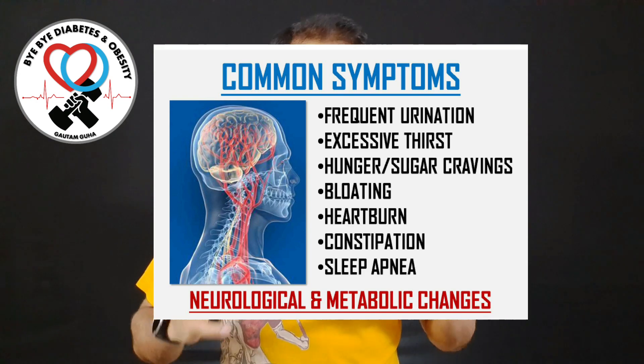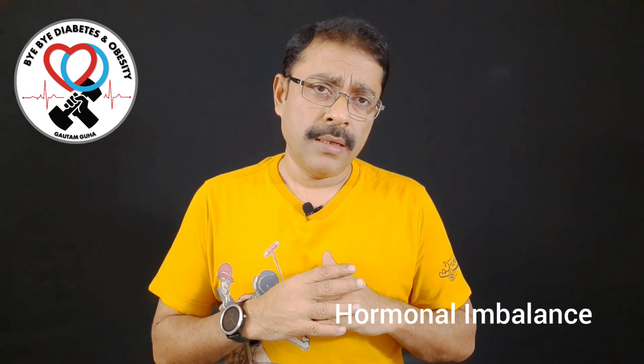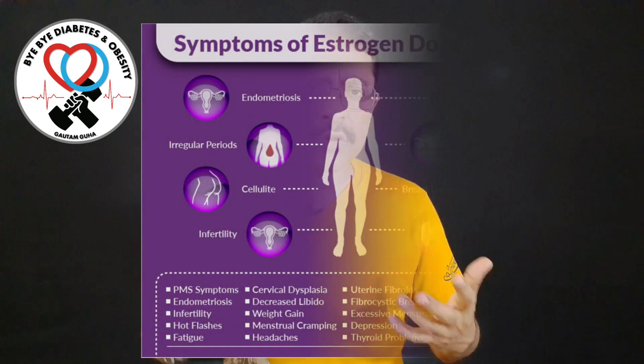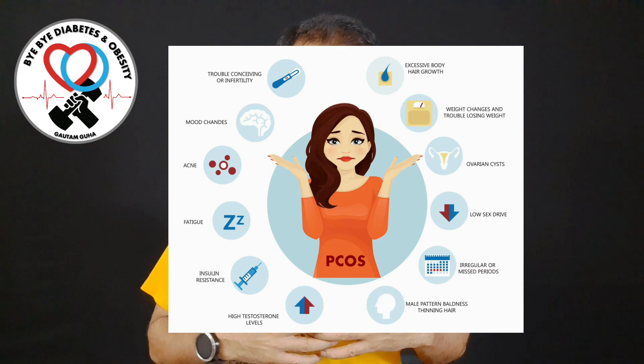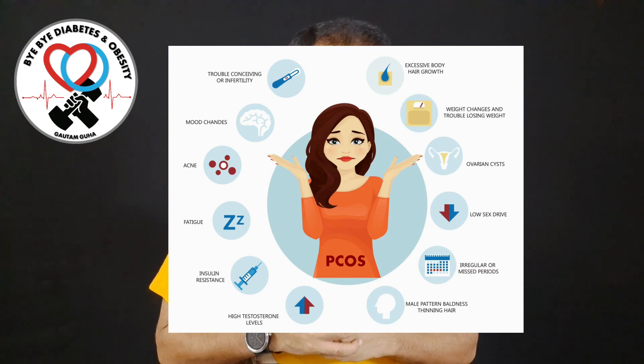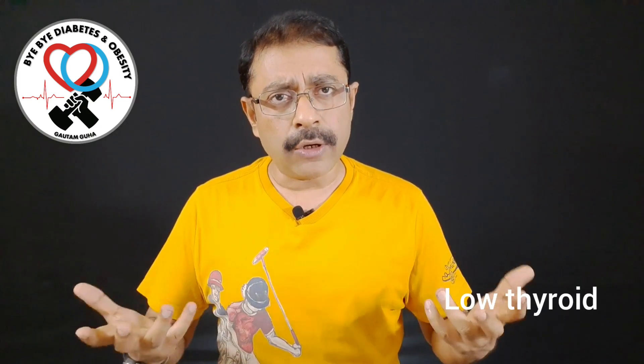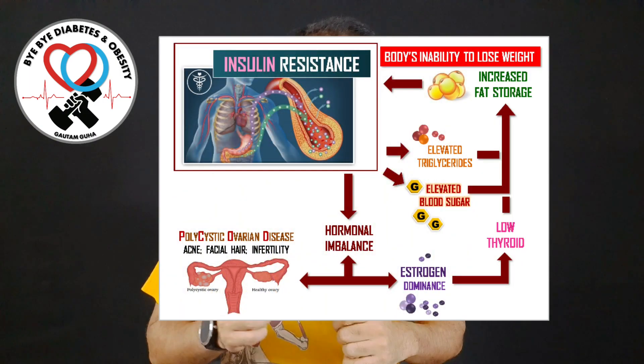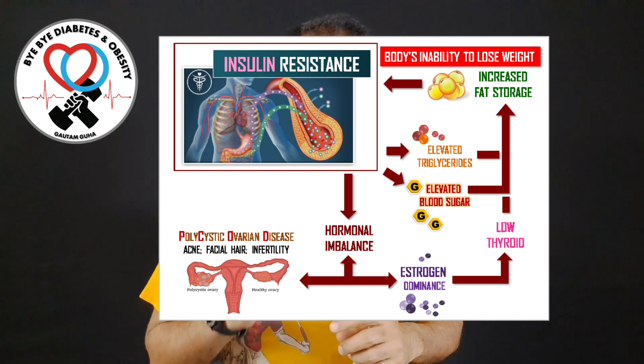Besides all this, another important thing that high insulin or insulin resistance in your body affects is the hormonal imbalance. This hormonal imbalance is seen in estrogen dominance. The polycystic ovarian symptoms show up in females in form of acne, facial hair, and infertility. It shows up in low thyroid levels — hypothyroidism. And all this combined with high blood glucose and high triglycerides ends up making you fat, increasing the fat storage. Insulin resistance is a primary factor in why you are not able to lose weight.